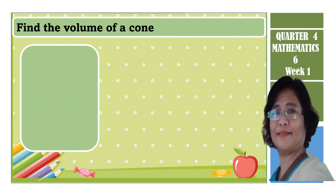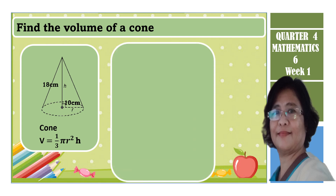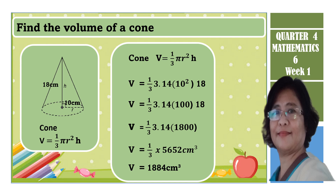Let us find out the volume of the cone. The formula is: Volume = (1/3) × π × r² × height, where the cone has a height of 18 cm and a radius of 10 cm. Using the order of operations, 10 squared equals 100, times 18 gives 1,800, times 3.14 gives 5,652, divided by 3 gives the final answer of 1,884 cm cubed.